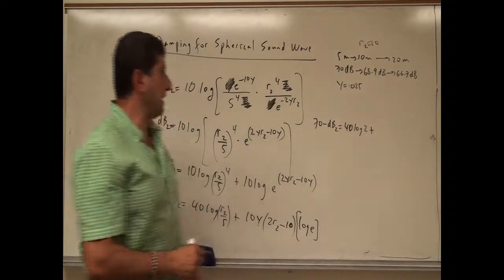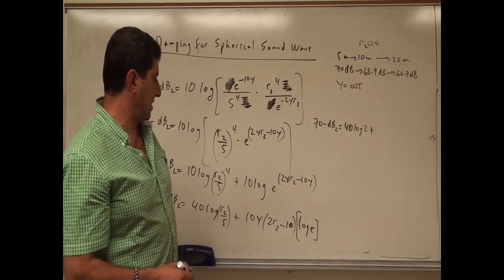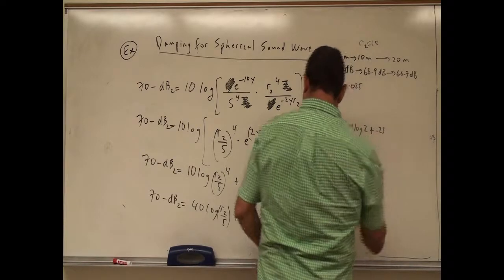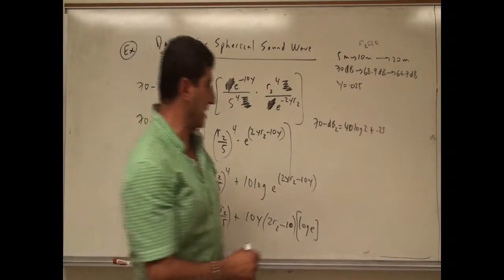Plus, and then 10 times gamma, remember gamma was 0.025, so 10 times gamma is going to be 0.25. Then if you put here R2 is 10, that's 20 minus 10, that's going to be 10 again.